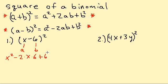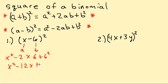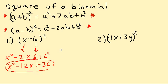Plus 6 squared. So this gives us x squared minus — multiplying 2 times x times 6 — which is minus 12x, plus 6 squared which is 36. And that's our answer.